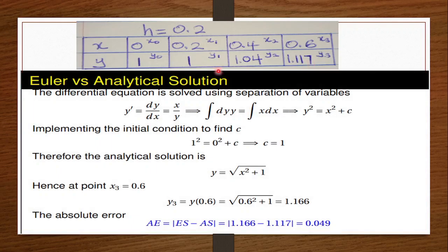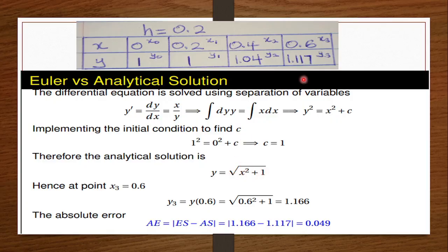To verify, we solve analytically. Given y' = x/y, we use integration to get y² = x² + c. Using initial values x=0, y=1: 1² = 0 + c, so c=1. Making y the subject gives y = √(x² + 1). When x=0.6, the exact value is y = √(0.36 + 1) ≈ 1.166. But the Euler method gave us 1.117, so the absolute error is approximately 0.049, confirming that the Euler method is not very accurate.